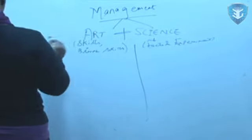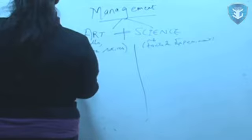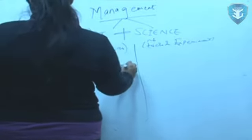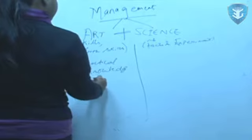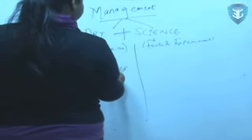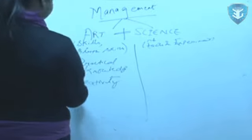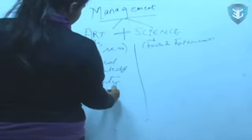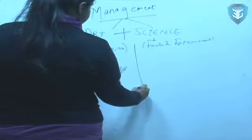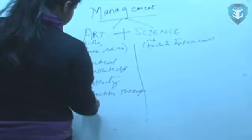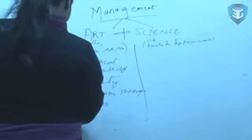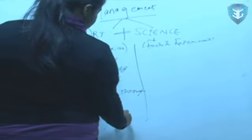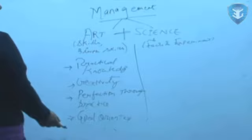The reason for calling management an art is that it requires some practical knowledge. Secondly, creativity because a manager has to deal with different types of employees, so he needs to act differently with everyone. Then is perfection through practice. Everybody cannot just be a good manager, so this perfection comes through practice. And lastly, it is goal oriented. Means behind every move of a manager, there is some set goal in his mind.